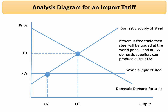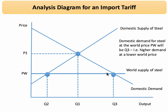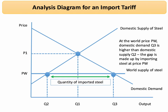If PW is the world price and domestic suppliers are effectively price takers, then steel will be traded at PW. At PW, domestic suppliers can produce output Q2. However, consumers want to buy steel at that cheaper world price, so domestic demand expands to Q3. Since Q3 is higher than domestic supply Q2, the gap from Q2 to Q3 is made up by importing steel at the world price PW.